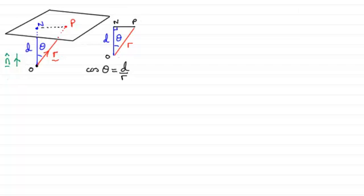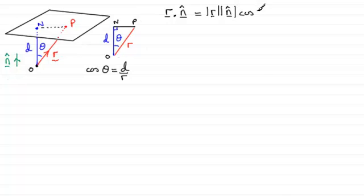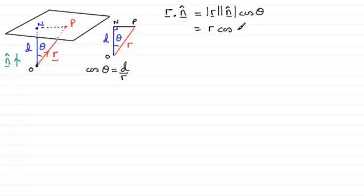Then if I do R dotted with that unit normal vector, we should be familiar with the scalar product or dot product rule. If you dot two vectors together, it equals the magnitude of each of the two vectors multiplied together, then multiplied by the cosine of the angle between them. So we've got R dot N̂ equals magnitude of R multiplied by the magnitude of the unit vector times cosine theta. The magnitude of R is R, and the magnitude of a unit vector is one, so we get simply R cos theta.